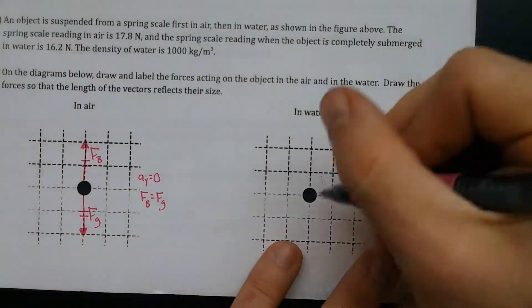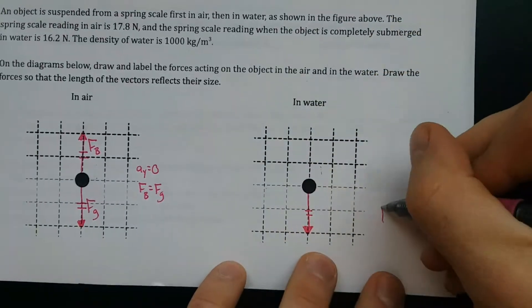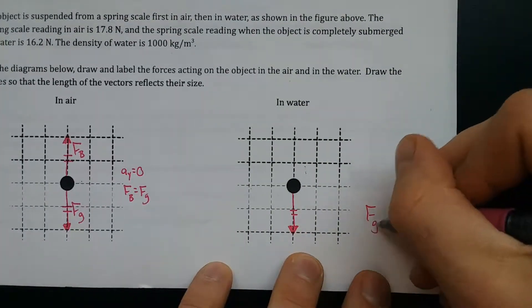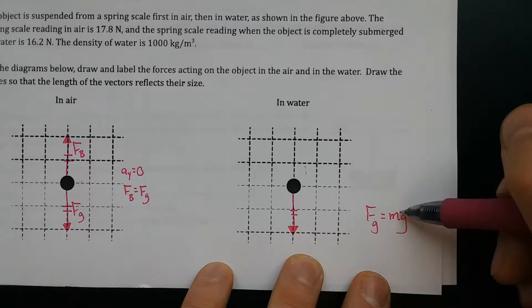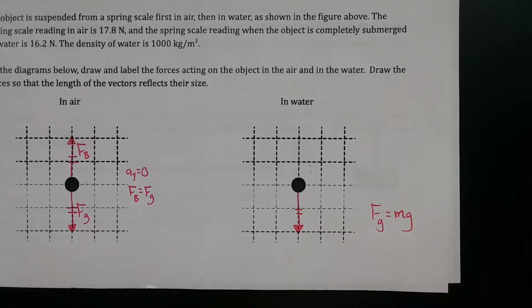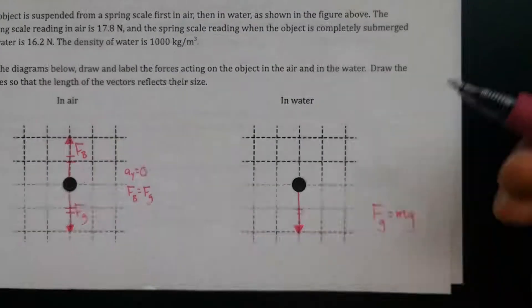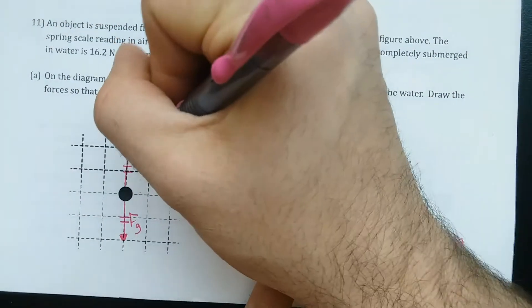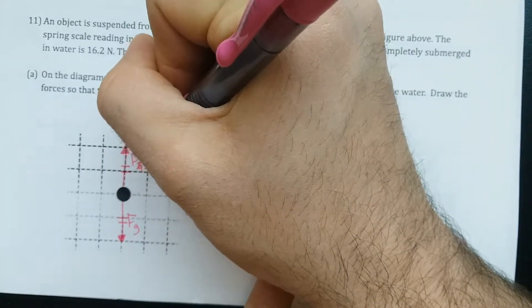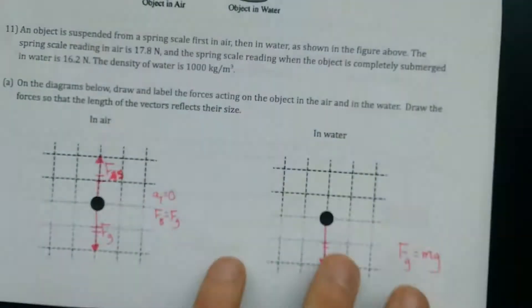In the water, one thing I know is that the gravitational force is the same size. As always, gravitational force equals m times g. Nothing changed about the mass of the object. Nothing changed about the gravitational field strength of Earth. So that has to be the same downward force. But we're told the spring... Oh, sorry, this isn't a buoyant force. This is a spring force. Again, catching mistakes.